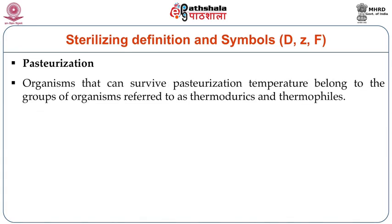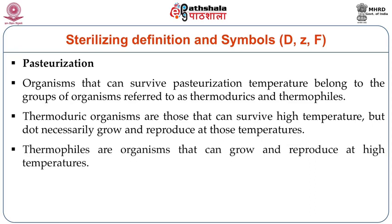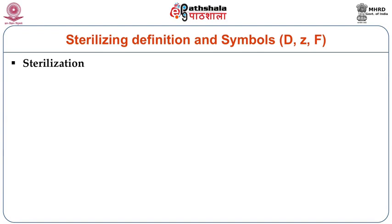Organisms that survive pasteurization temperature belong to groups referred to as thermodurics or thermophiles. Thermoduric organisms are those which can survive high temperature but do not necessarily grow and reproduce at those temperatures. Thermophiles are organisms that can grow and reproduce at high temperatures. We also have psychrotrophs and psychrophiles, which are microorganisms that grow at lower temperatures. After understanding pasteurization, let us try to understand sterilization.